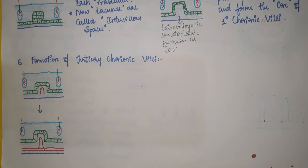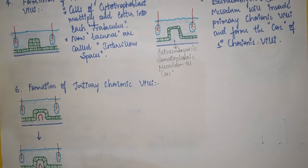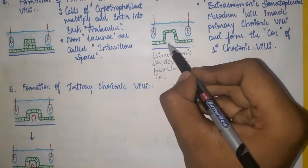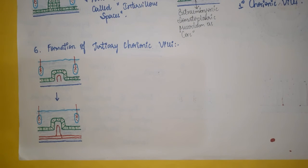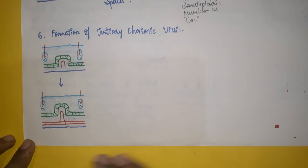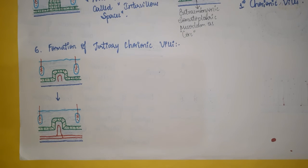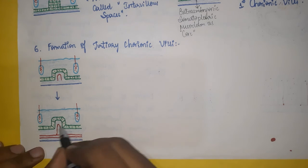Finally, the sixth step is formation of tertiary chorionic villae. In the primary chorionic villae there was a solid mass of cytotrophoblast cells; in the secondary chorionic villae there was extra-embryonic somatopleuric mesoderm as the core. In the tertiary chorionic villae, blood vessels are formed inside the core of the secondary chorionic villae, and these formed blood vessels later communicate with the circulatory system of the embryo. So the main purpose is achieved here — exchange between maternal blood and fetal blood.